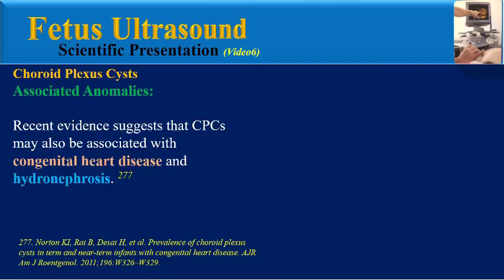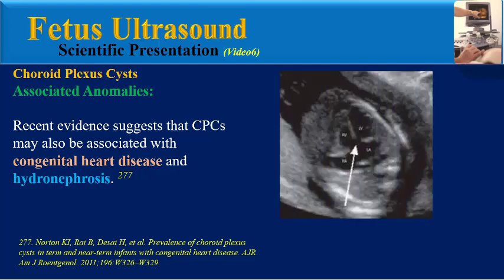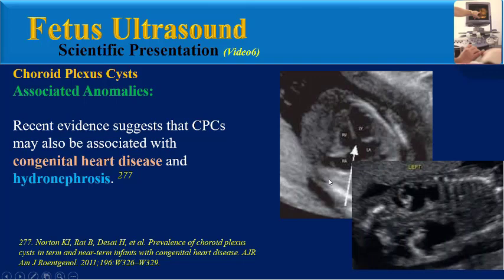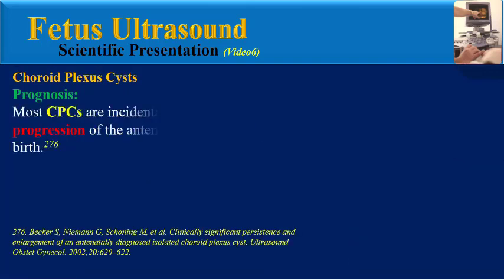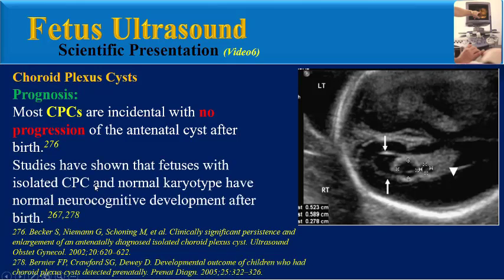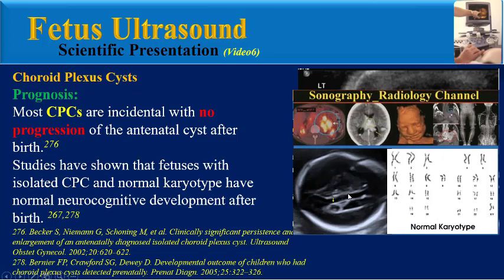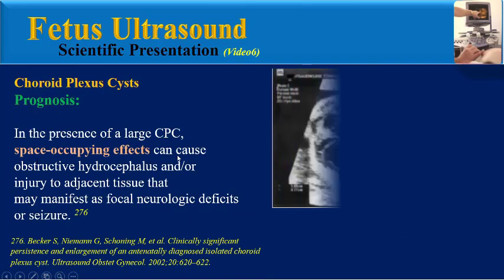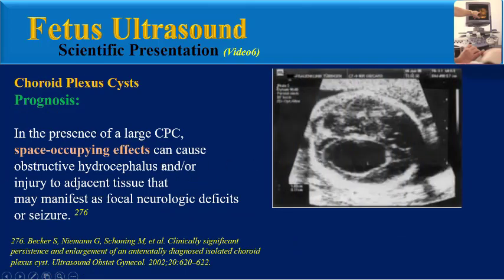Recent studies suggest that choroid plexus cysts may also be associated with congenital heart disease and hydronephrosis. What is the prognosis? Most choroid plexus cysts are incidental findings with no progression of the antenatal cysts after birth. Some studies have shown that fetuses with isolated choroid plexus cysts and normal karyotype have normal neurocognitive development after birth. Although rare, large choroid plexus cysts can cause obstructive hydrocephalus or injury to adjacent tissue, manifesting as focal neurologic deficits or seizures.